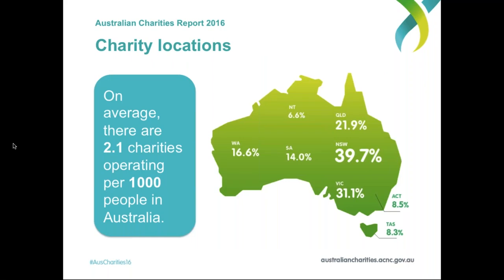Moving on to locations — this reflects fairly closely the population spread in the country. New South Wales has the biggest population and the biggest concentration of charities. On average there are 2.1 charities operating for every 1,000 people in Australia, which is relatively on par with other countries. The numbers in the picture of Australia add up to more than 100 percent because a number of charities operate in more than one location.